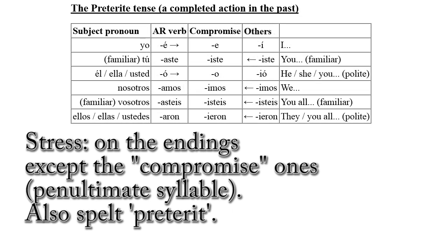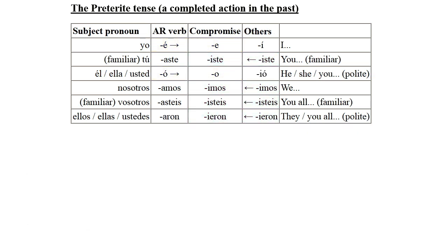The preterite is for talking about an event that has a start and an end, whether you stipulate a time or not. The event also isn't really related to the present — you are simply talking about an event in the past. The preterite can take a little time to learn, as there are exceptions in common verbs. There are endings for AR verbs and endings for the others as usual, but there is what I would call a compromise for certain irregular verbs which take endings from both columns. The stress for regular verbs goes on the endings, and the ones in the compromise column go on the penultimate syllable. There is a good way of remembering the I form and the he/she/you form from an excellent course that Michel Thomas recorded.